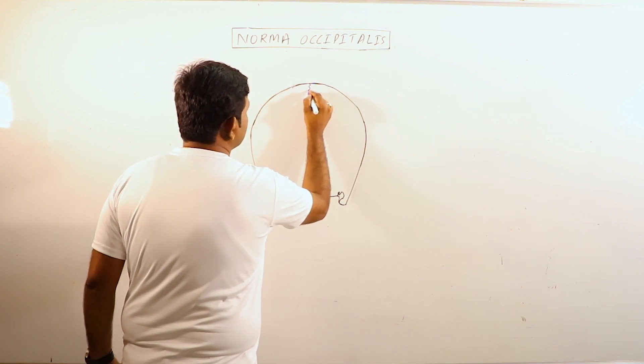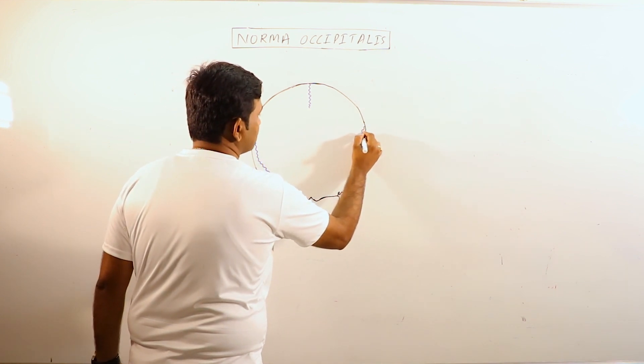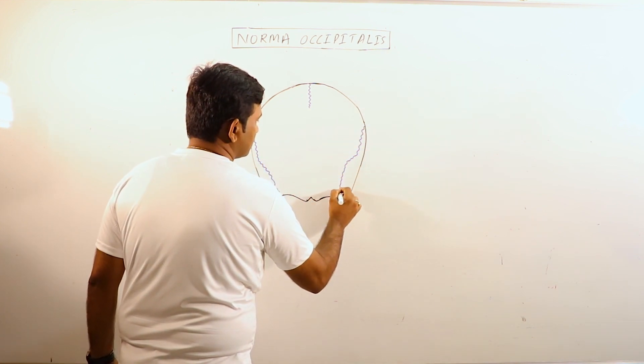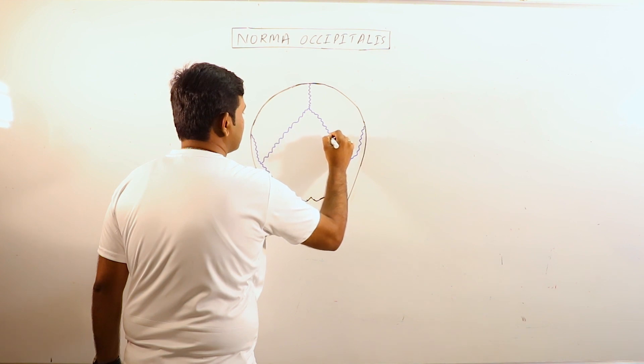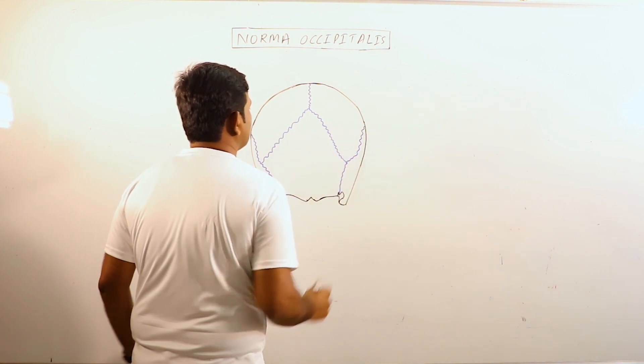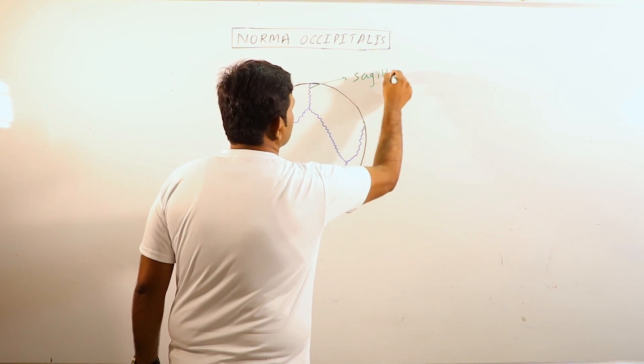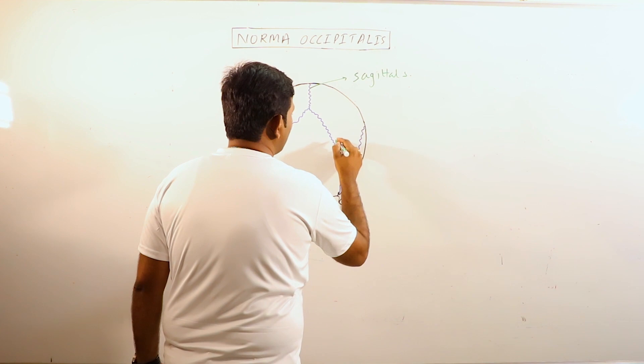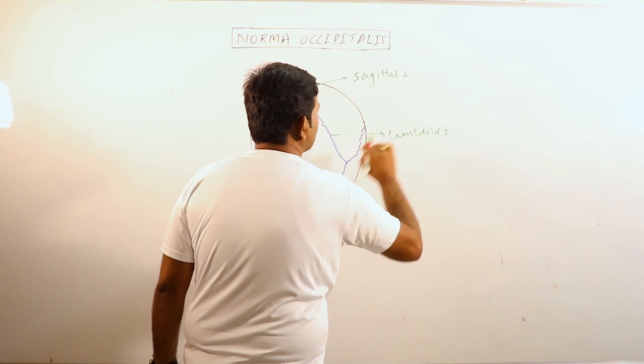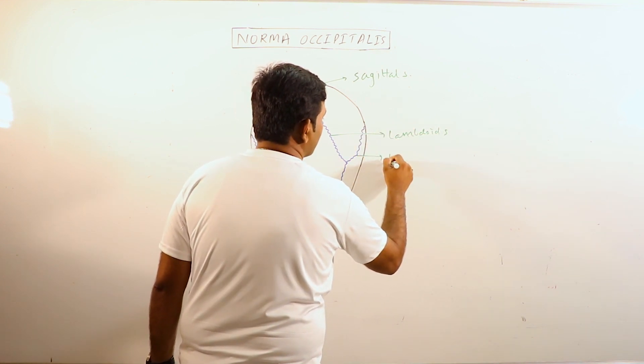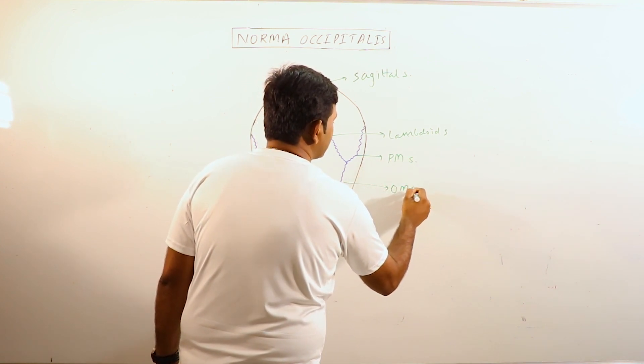Sutures can be observed. This is sagittal suture, this is lambdoid suture. This is parietomastoid suture, this is occipitomastoid suture.